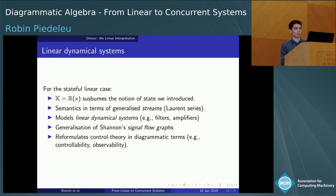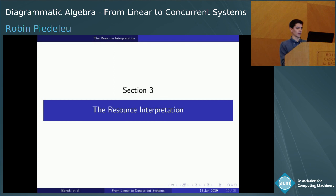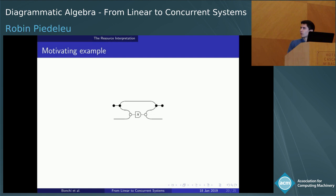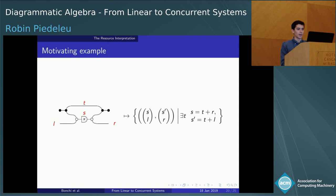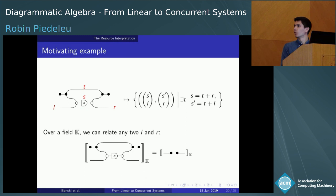To motivate this further, consider a specific diagram and its associated semantics according to the rules given earlier. The first constraint says that whatever comes out on the right plus what is kept in the feedback loop must be precisely what was stored in the register. Over a field like the reals, any pair of real values can satisfy this, because even if r is greater than s, we can send a negative value in the feedback loop — so the interpretation of the diagram is the whole space.